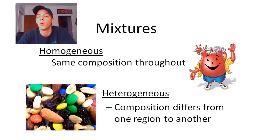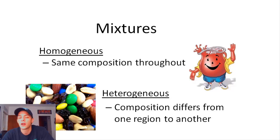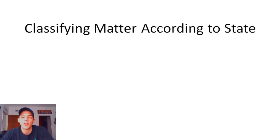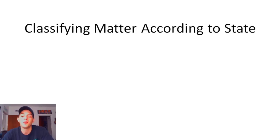That covers classifying matter in terms of composition. Now let's talk about classifying matter in terms of state. There are three states of matter I'm going to cover: solid, liquid, and gas. There's also a fourth state called plasma, but I won't go over it in this video — I'll leave that to you.